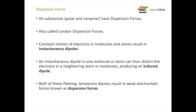We're going to dig deeper into our three main intermolecular forces. The first and the weakest type is dispersion forces. Every single type of substance has dispersion forces, polar and nonpolar. The other name for these is London dispersion forces. What happens is the electrons in a molecule or an atom are constantly moving.